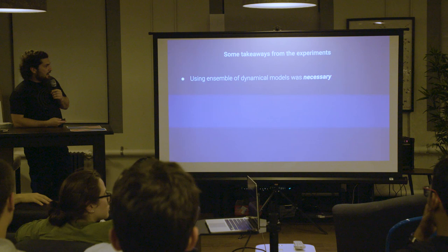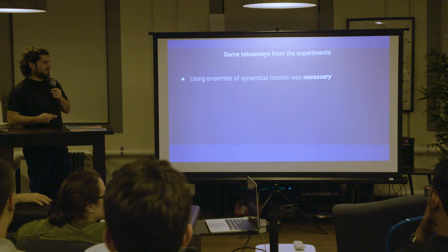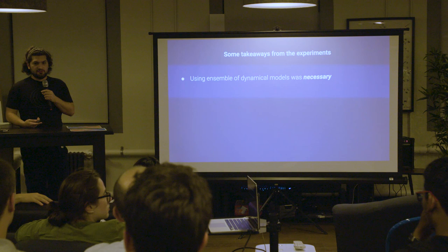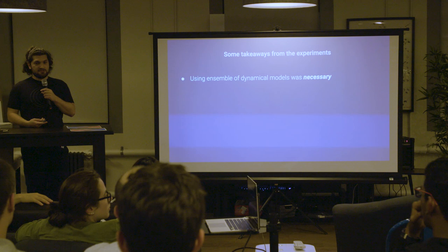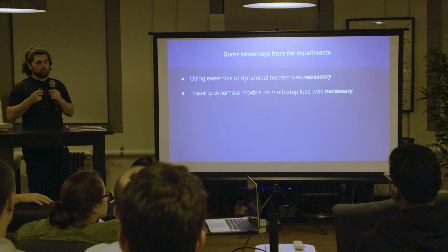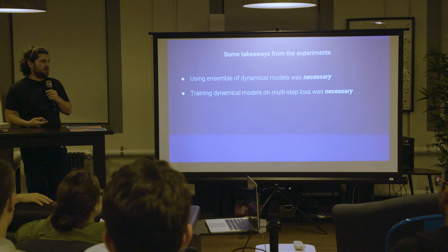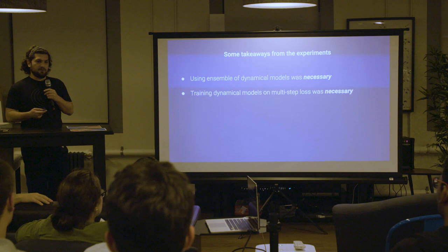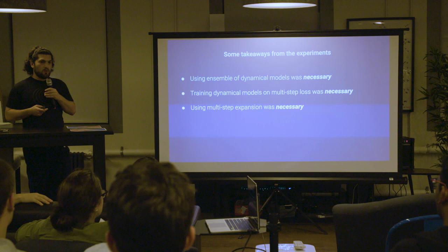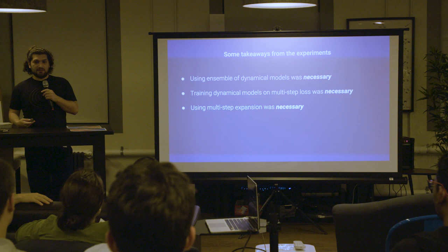Some important takeaways from my experiments: using ensembles for the dynamics model was always necessary — a single model never worked or was never able to beat the baseline, and this is a recurring theme in the community. Training dynamics models on multiple-step losses, making them more consistent by feeding their own predictions back into themselves, was also necessary for improving over the baseline; otherwise the models converge to the same value without any gain in sample efficiency. For value expansion, expanding for more than one or two steps was always needed to get an actual benefit.